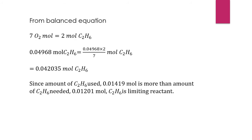Okay, so then we need to determine the limiting reactant. From the balanced equation, 7 mol O2 equals 2 mol C2H6. By using stoichiometry, we will get 0.042035 mol C2H6. Since amount of C2H6 available, 0.01201 mol, is less than amount of C2H6 needed, 0.042035 mol, C2H6 is the limiting reactant.